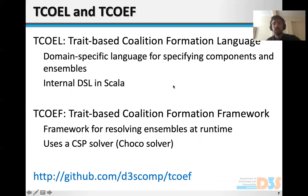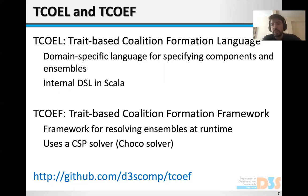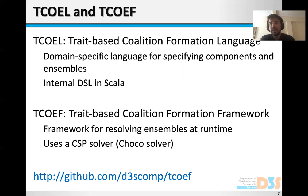We have also built machinery around this idea of autonomic ensembles and components. In particular, we have developed the trade-based coalition formation language and the trade-based coalition formation framework. The language is a DSL on top of Scala that allows specifying components and ensembles, and the framework takes the specification of ensembles and the runtime state of the system and outputs which ensembles are formed and which components are their members.